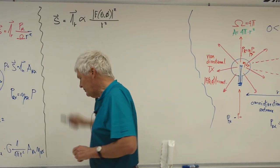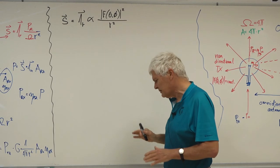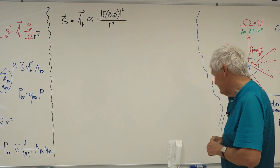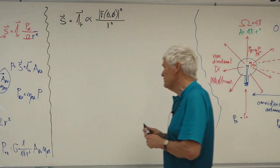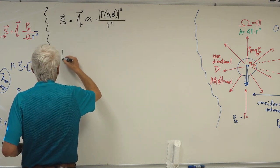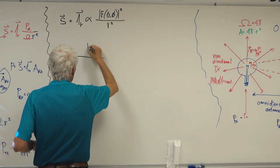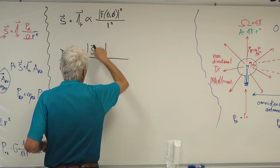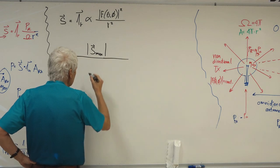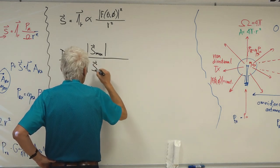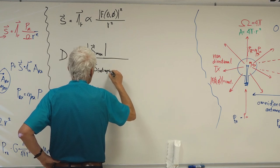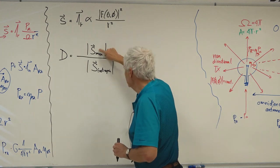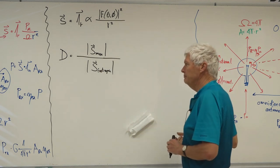In linear units — I'm not going to use logarithmic units anywhere. Logarithmic units are good for measurements, for laboratories, for specifications, but for mathematical formulas it is better to use linear units. Life is much easier with linear units. So the directivity will be the maximum of the Poynting vector, absolute value, divided by what an isotropic antenna would give.